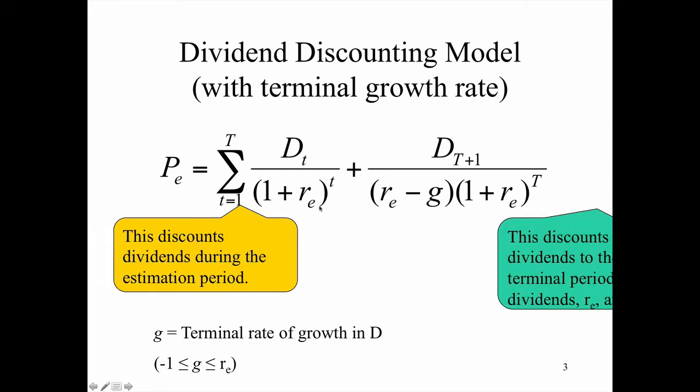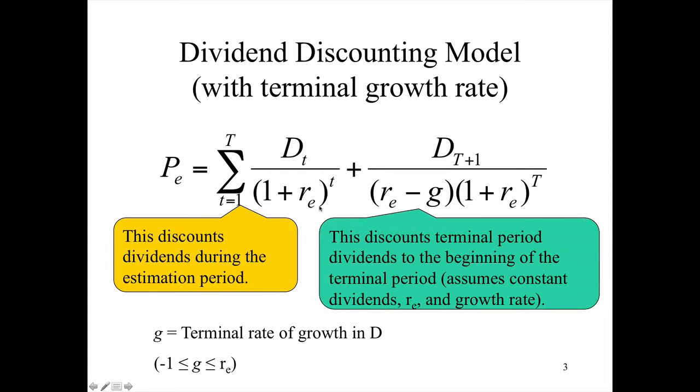This is the estimation period, and this is the terminal period. Again, we assume constant dividends, constant and continuing cost of equity capital and the growth rate G. That'll bring it back here, and this part will divot in. These will discount each one to the beginning of the terminal period, and then this will discount that one value back to here.